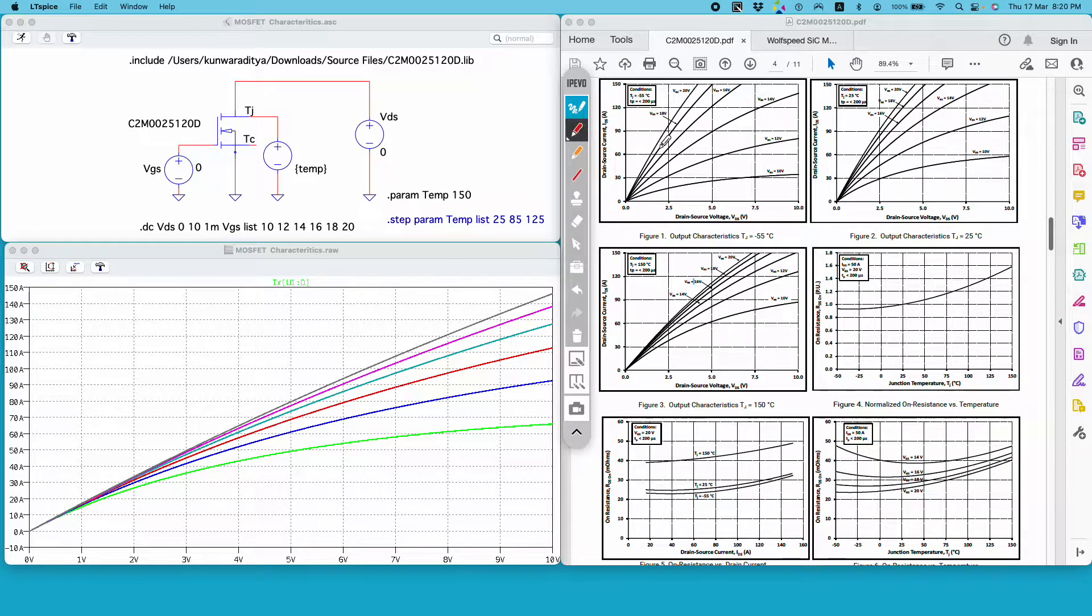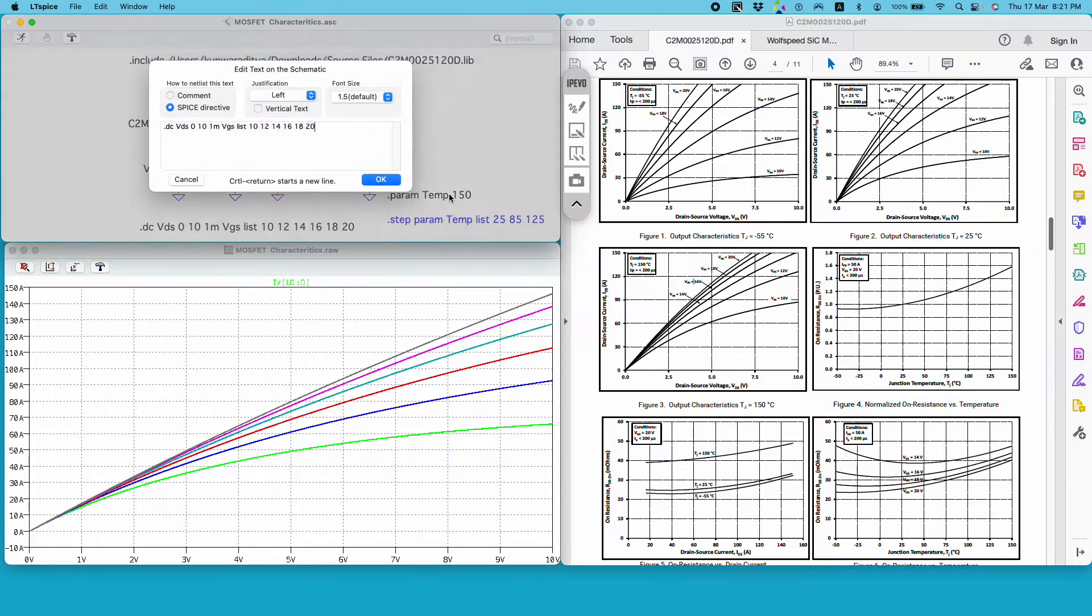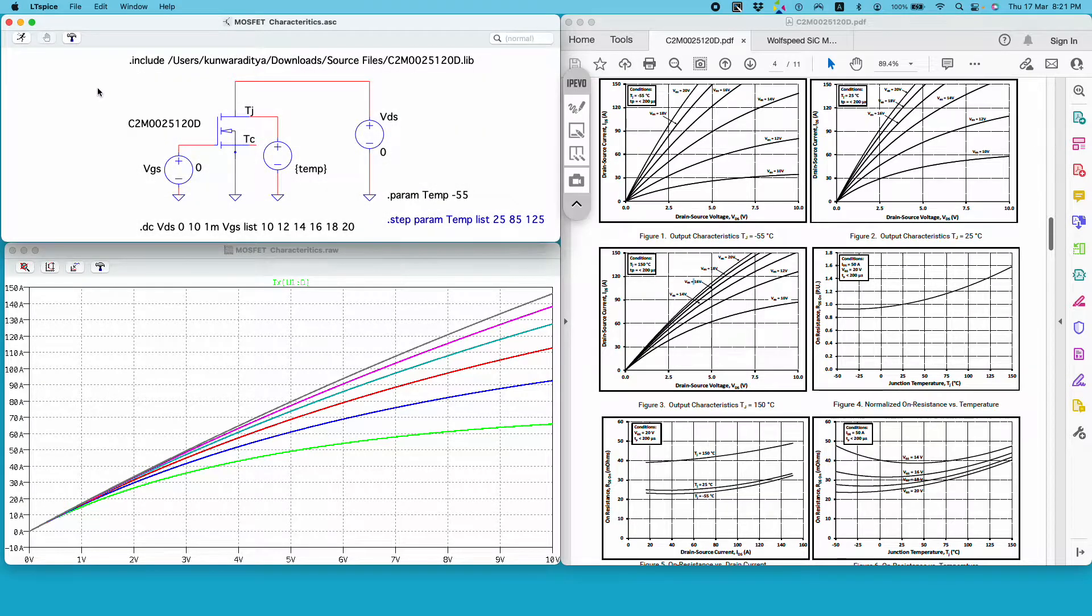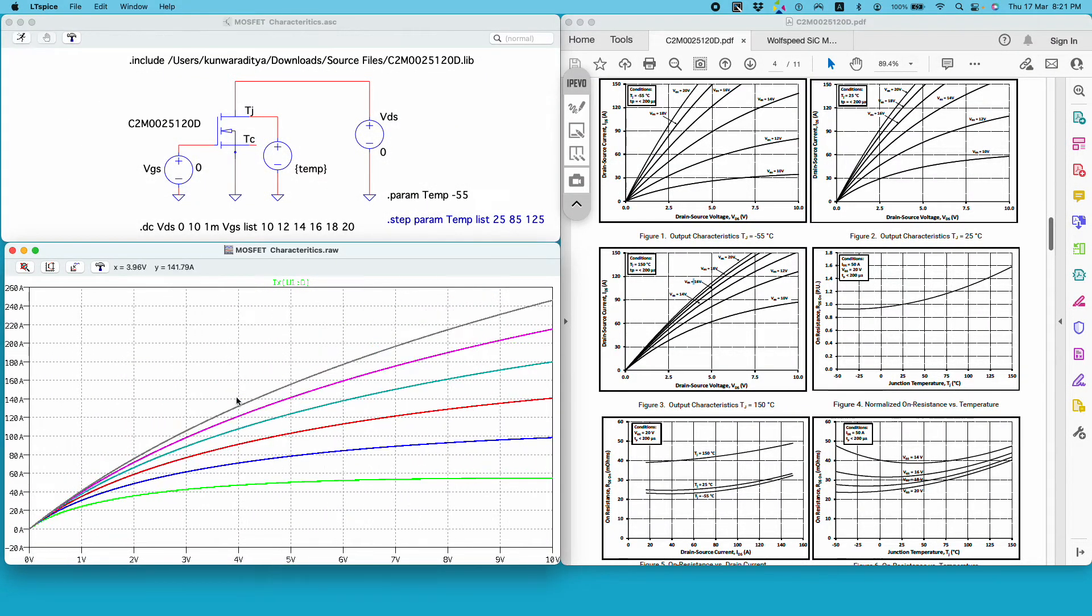So I can change the temperature variable to be minus 55 and if I run it I get a set of curves correlating to this particular figure one of the datasheet.